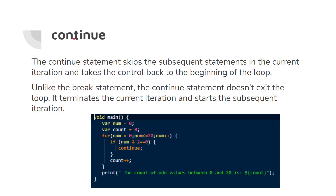The 'continue' keyword: the continue statement skips the subsequent statements in the current iteration and takes control back to the beginning of the loop. We know that 'break' exits the loop and goes to the statement after the loop, but 'continue' doesn't exit the loop — it terminates the current iteration and starts the next iteration.